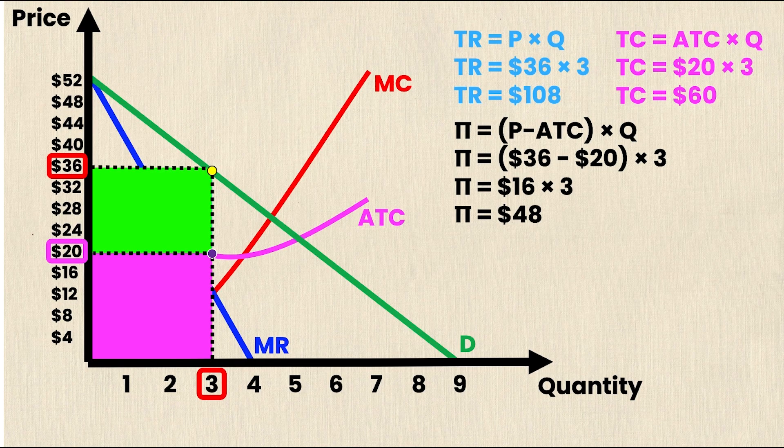Solving this further, we get profit is equal to 16 times 3. And finally, profit is equal to $48.